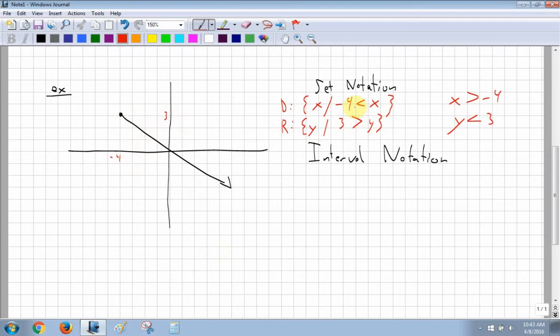For interval notation for the domain, the domain is going to go from negative 4 all the way up to infinity. Notice that negative 4 is included. So I'm going to actually use a square bracket around negative 4, comma. It's going to go all the way to infinity. And infinity is never included.